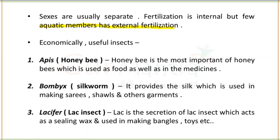Economically useful insects in this group: first, Apis — the honey bee — provides honey, used as food and in medicines. Second, Bombyx — the silkworm — provides silk, used in garment industries. Third, Laccifer — the lac insect — secretes lac, which acts as sealing wax and is used in making bangles and toys, and is also important industrially.